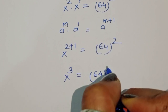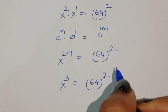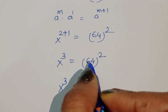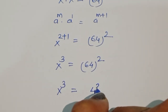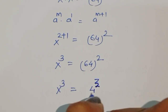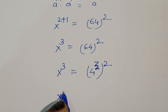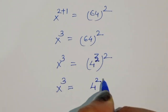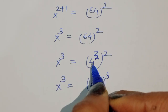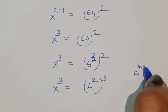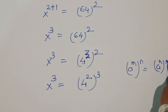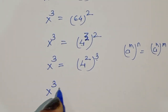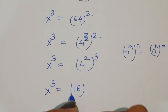So x cubed is equal to 64 squared. Now 64 can be written as 4 cubed, so 64 squared becomes 4 cubed squared, which equals 4 to the power 6. Using the rule a to the power m to the power n equals a to the power m times n, we can write 4 squared to the power 3, which is 16 to the power 3. So x cubed is equal to 16 cubed.